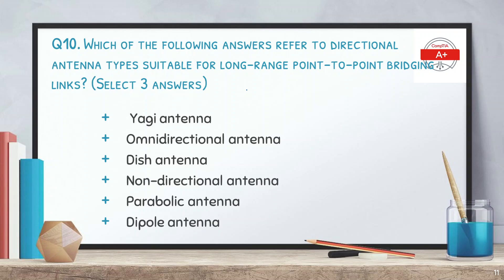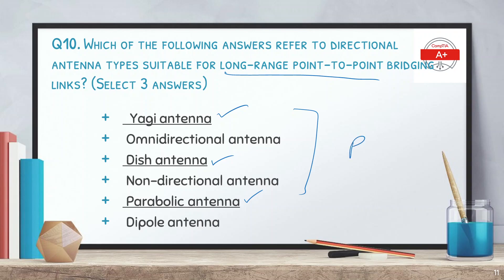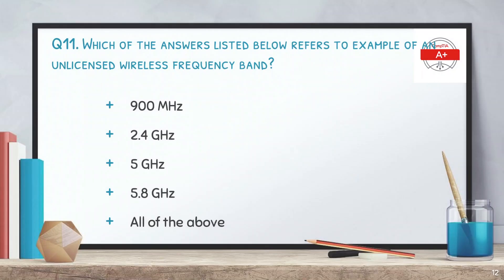Question 10: Which of the following answers refer to directional antenna types suitable for long range point-to-point bridging links — select 3 options. The options are: Yagi antenna, omni-directional antenna, dish antenna, non-directional antenna, parabolic antenna, and dipole antenna. The correct answers are: Yagi antenna, dish antenna, and parabolic antenna, as these are used for point-to-point long range communication.